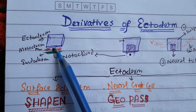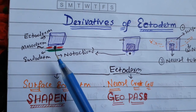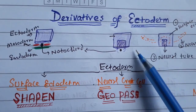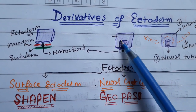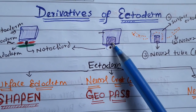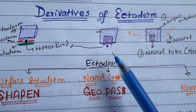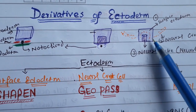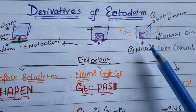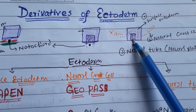This is ectoderm, this is mesoderm, and this is endoderm. This is the notochord. There will be secretion from the notochord, and that secretion is going to act on the ectoderm. Because of this, some part of the ectoderm is going to become thickened, and that thickened part of the ectoderm is called the neural plate. This neural plate is going to form a neural tube.